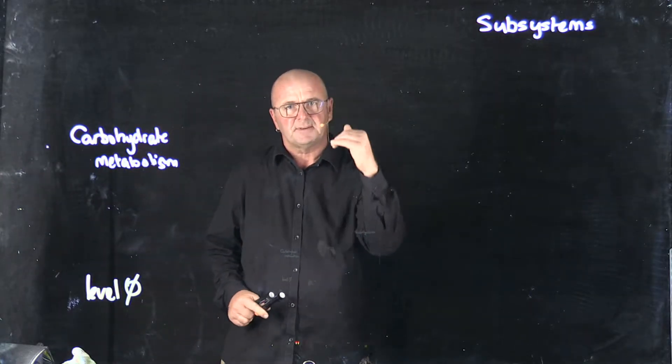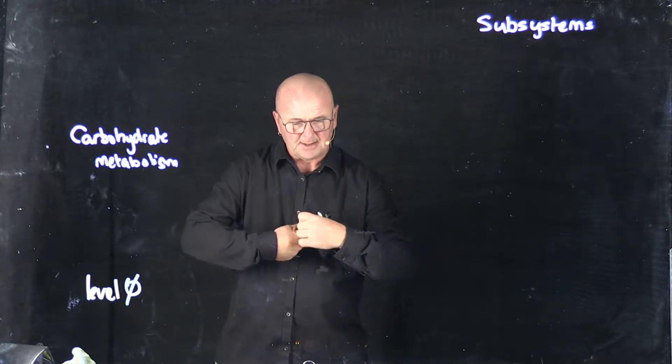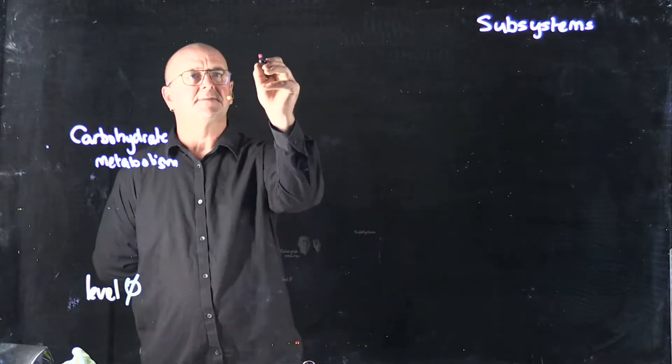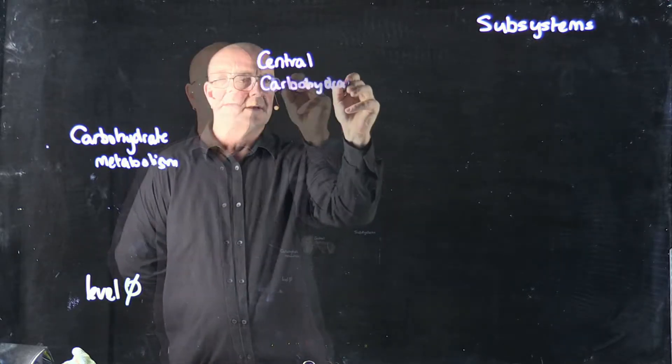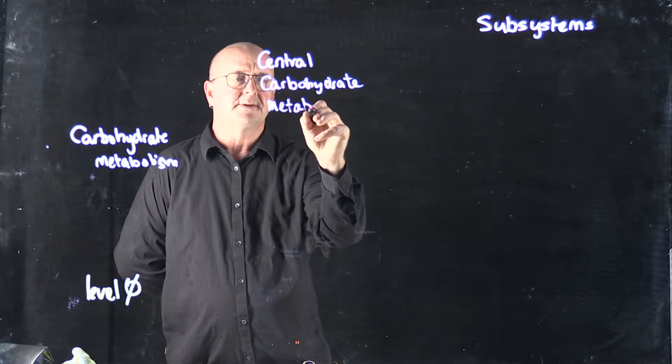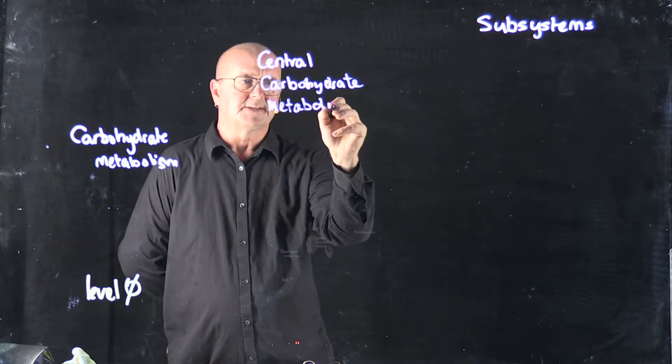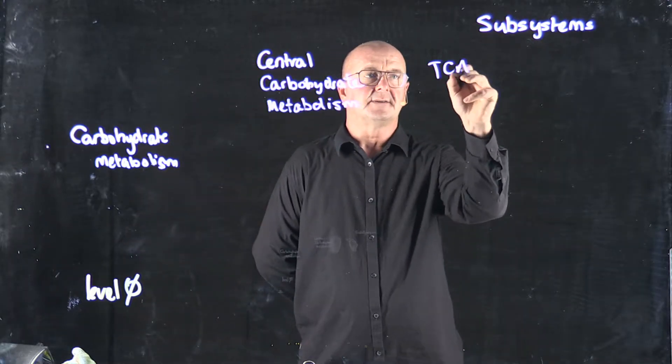Within carbohydrate metabolism, we have different groups of pathways that are working together. For example, we might have central carbohydrate metabolism, and within central carbohydrate metabolism, we might have the TCA cycle.